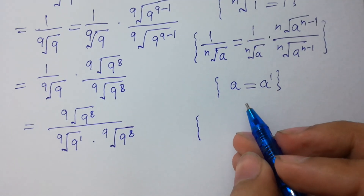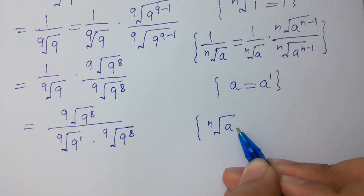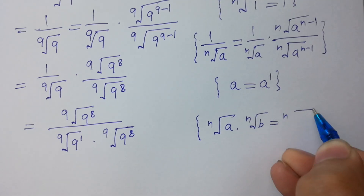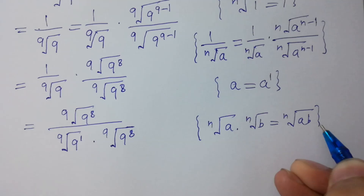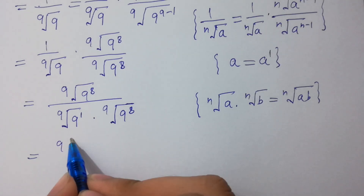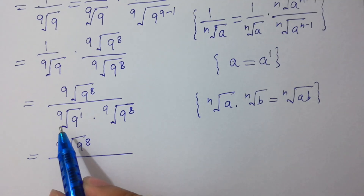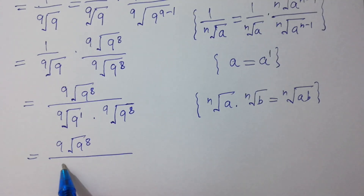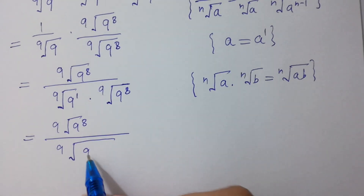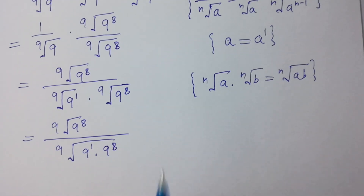Since n-th root of a times n-th root of b equals n-th root of a times b, so 9th root of 9 to the power 1 times 9th root of 9 to the power 8 equals 9th root of 9 to the power 1 times 9 to the power 8. Got it?